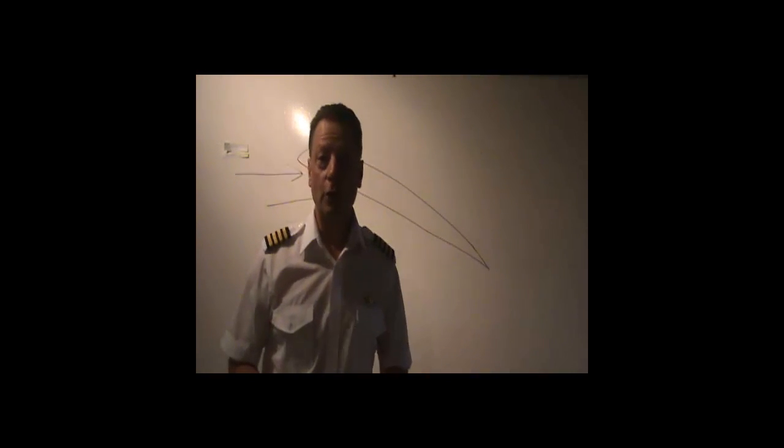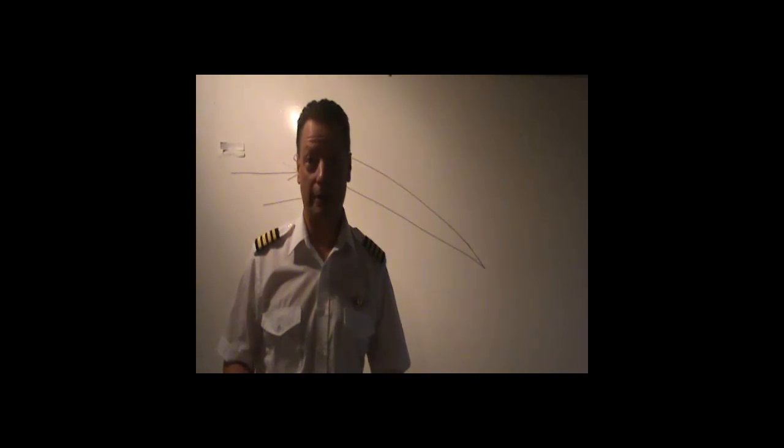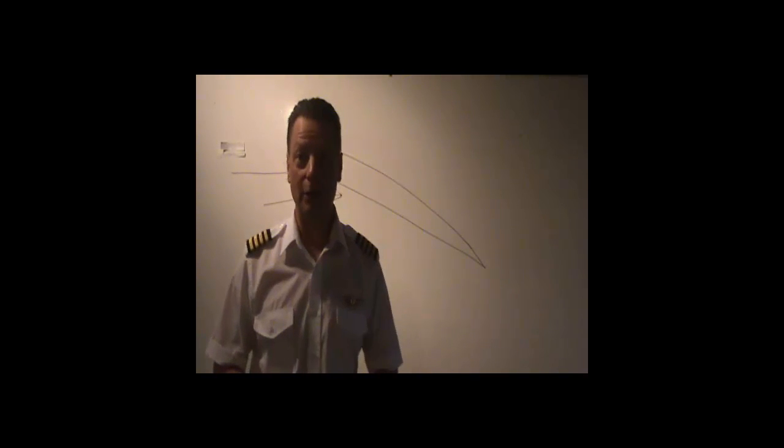Now, another thing that we want to talk about today is a spin. And a spin is basically an aggravated stall where the airplane will end up descending in a corkscrew manner. Now, you can imagine what would happen if you're in clouds and you can't see outside. You inadvertently stall the airplane and then you get into a spin. That could be very disorienting. Let's take a look at this video of a spin.